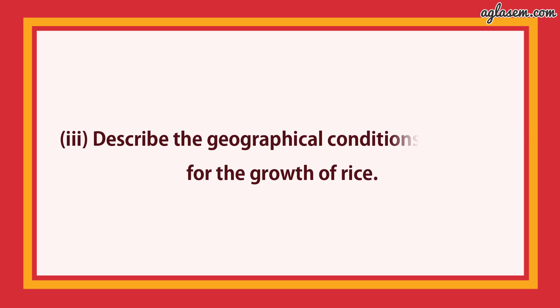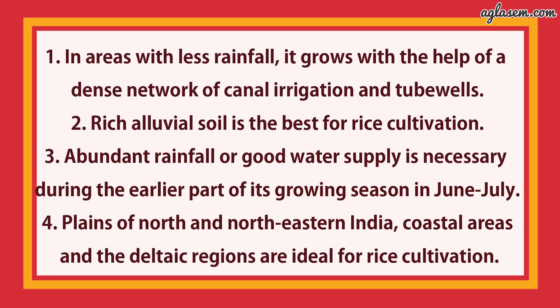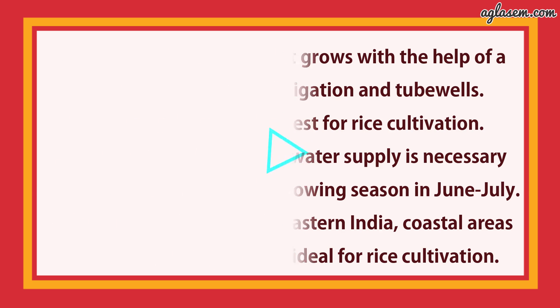Third part: describe the geographical conditions required for the growth of rice. Answer: in areas with less rainfall, it grows with the help of a dense network of canals, irrigation, and tube wells. Rich alluvial soil is the best for rice cultivation. Abundant rainfall or good water supply is necessary during the earlier part of its growing season in June and July. Plains of north and northeastern India, coastal areas, and the deltaic regions are ideal for rice cultivation.